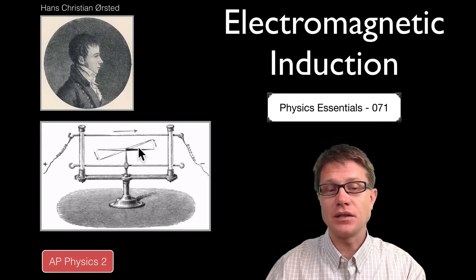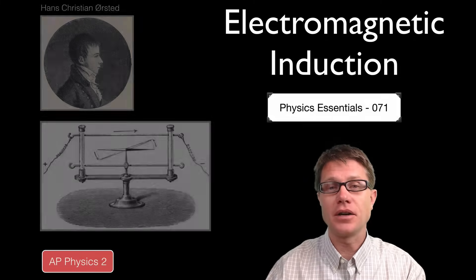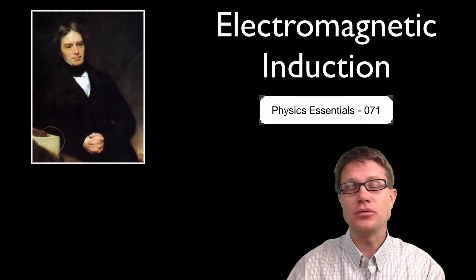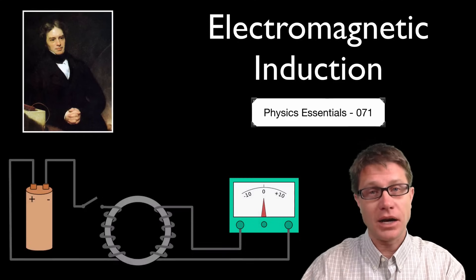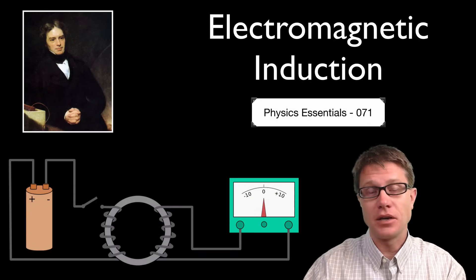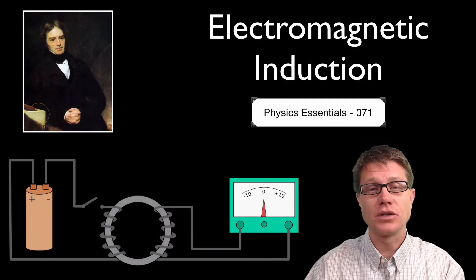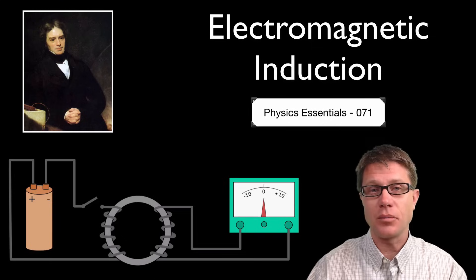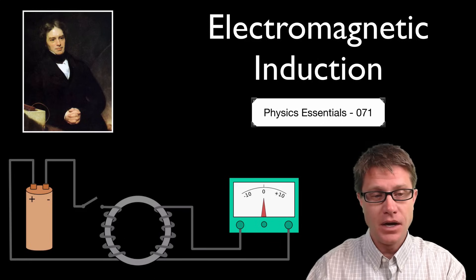But what scientists like Michael Faraday wondered is could you take a magnetic field and produce current from it? In other words, was the opposite true? And this is the apparatus that he used to study that.